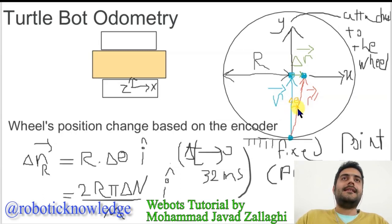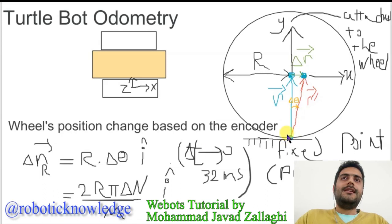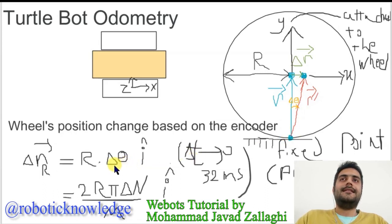The next question is: what is this delta theta? Before answering that question, let me explain why the change in position of this center point is happening at x of this local coordinate.